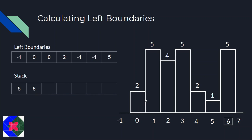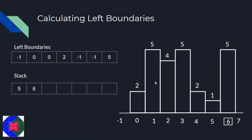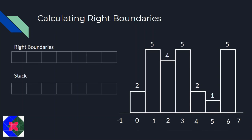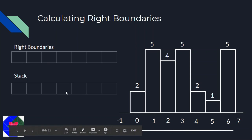Looking into the stack while traversing left-to-right means we are looking behind to find the left boundary. For right boundaries, we follow the same approach but in reverse — traversing from right to left so that looking into the stack means looking to the right to find the right boundary.